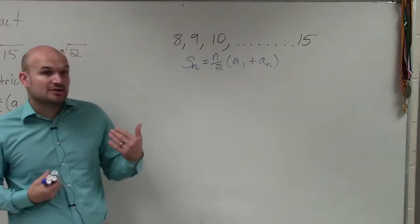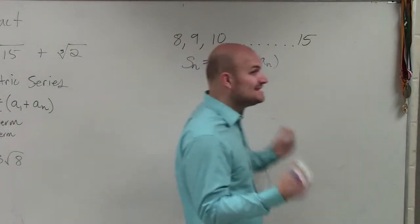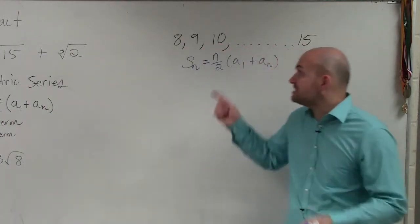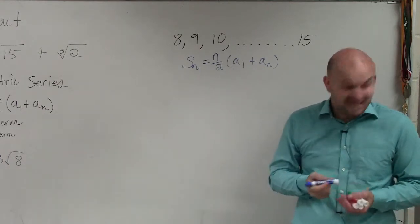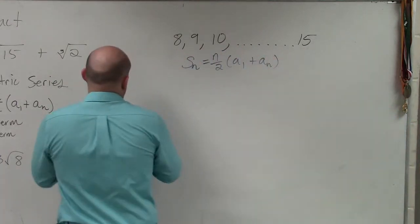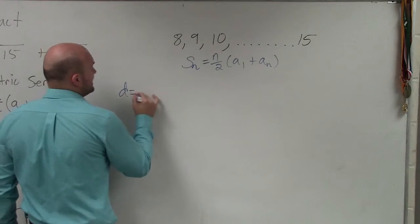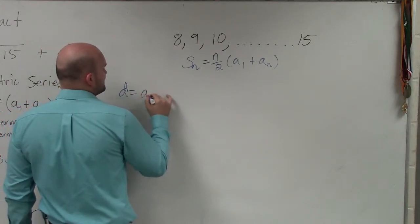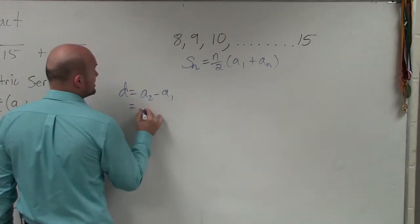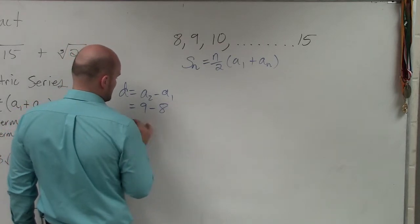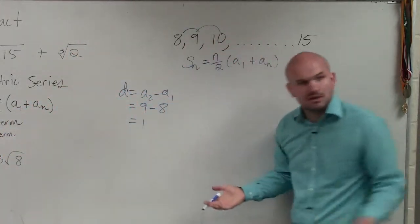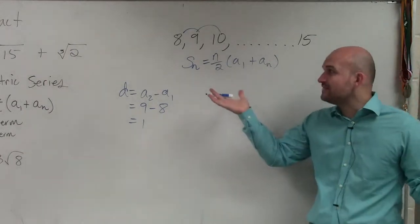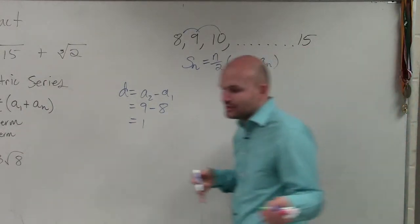So the first thing I'm going to do is I need to determine what type of sequence is this. Do these terms have a common difference or a common ratio? Difference, right? And you guys can see that. You can say d equals a sub 2 minus a sub 1, which is 9 minus 8, which equals 1. And is there a difference between each of these as 1? At least we can see, yes, it's 1. And actually, I believe the original problem even tells you it's an arithmetic sequence.